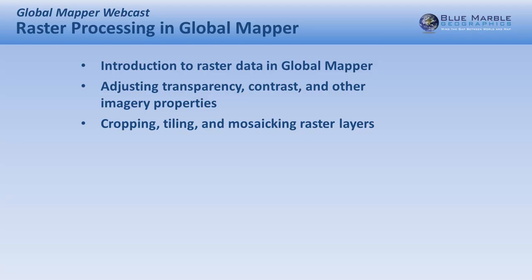We'll talk about cropping — physically reducing the size of imagery to limit it to a project area. We'll also talk about the tiling process, because raster files can get very large and hard to manage, so tiling helps you work in smaller sections. The opposite of that is mosaicing, which is actually a very simple process in Global Mapper — if you bring in multiple files and run an export, Global Mapper will inherently mosaic those tiles together.